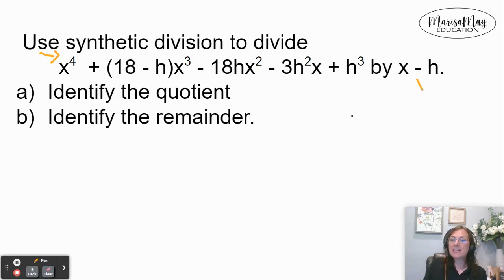I'm going to begin by taking the divisor and setting it equal to zero. So we're going to have x equals h. I do that because I need to put the h on the outside here as the divisor. Then I'm going to take the coefficients of x and write them in order as the power of x's decrease.